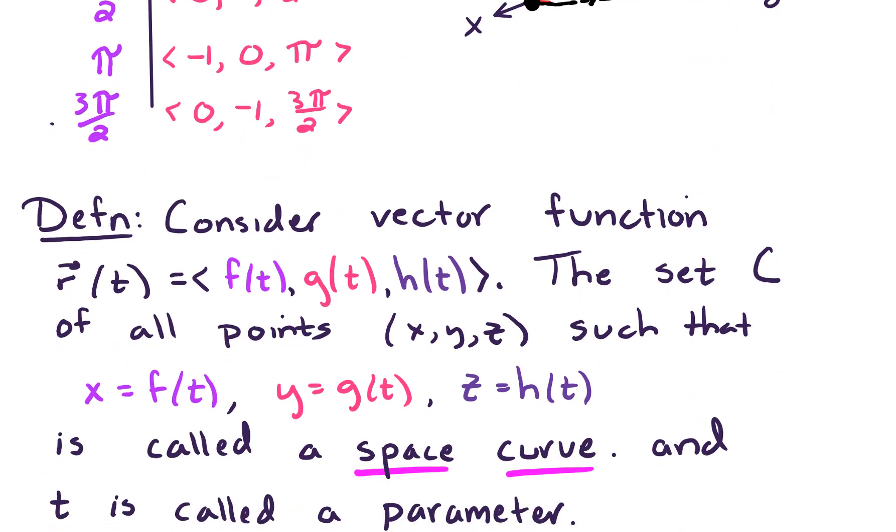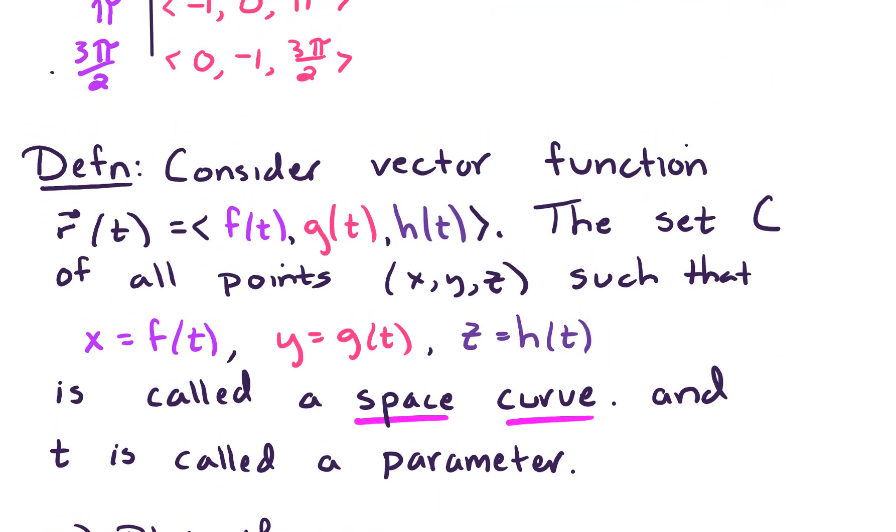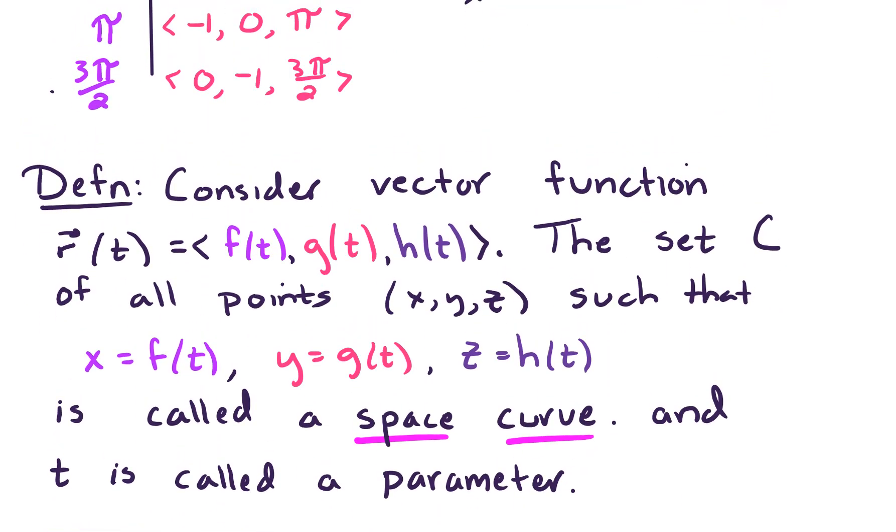So here's this idea formalized. Consider the vector function r of t equals f of t, g of t, and h of t. The set C of all points x, y, z, such that x equals f of t, y equals g of t, and z equals h of t, that set of points is called a space curve. And t is called a parameter.